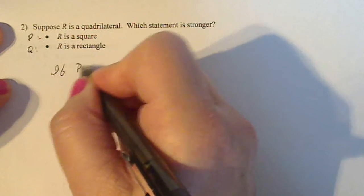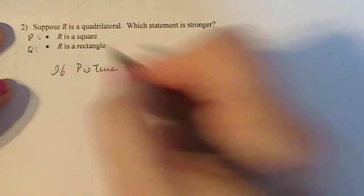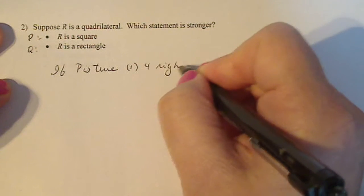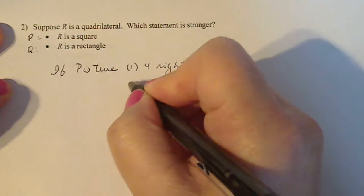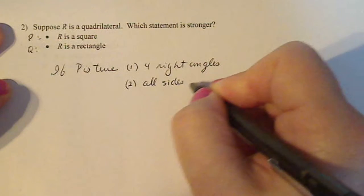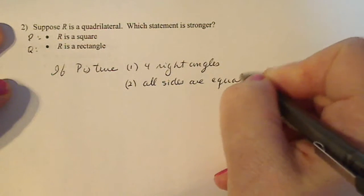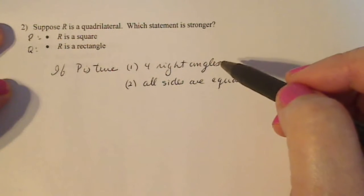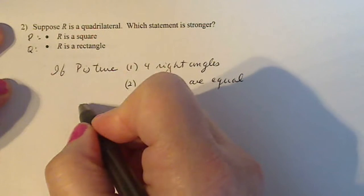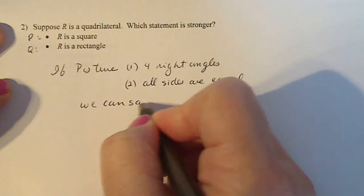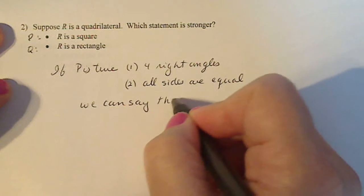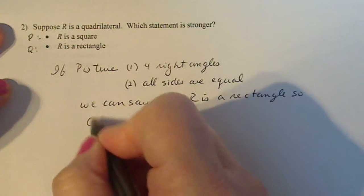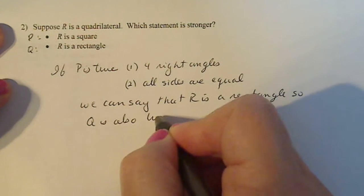So if P is true, that means that the quadrilateral is a square. What does that mean? So one, it has four right angles and two, all sides are equal. Four right angles and all sides are equal. Both of those are true. If a quadrilateral has four right angles, we can say that R is a rectangle.